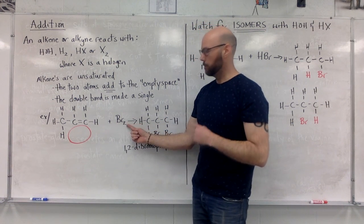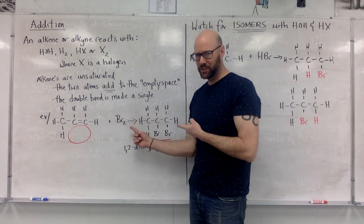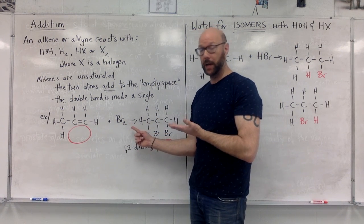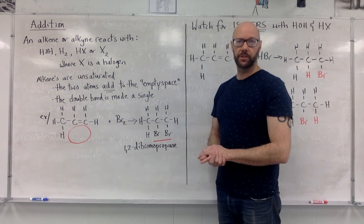The reactant, Br2, has two atoms in it. There's two empty spots, and this is a reactant with two atoms in it. Fills that empty space, and the double bond becomes a single bond.